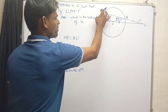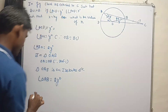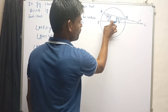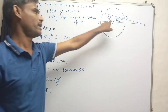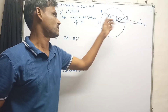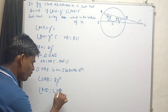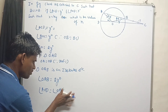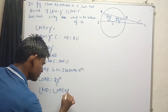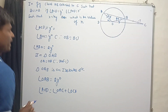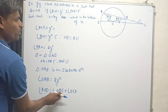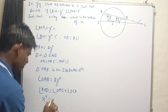Now look at angle AOD. Angle AOD is an exterior angle to triangle AOC, and it equals the sum of its two interior opposite angles. So angle AOD equals angle OAC plus angle OCA, which is two times y degrees plus y degrees.